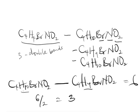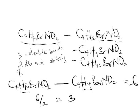Or you can also have 2 double bonds and a ring, a triple bond and a ring, or a double bond and a triple bond.